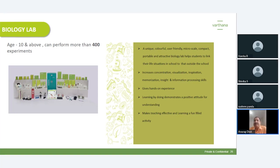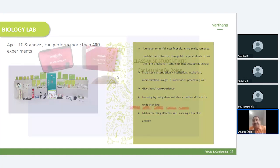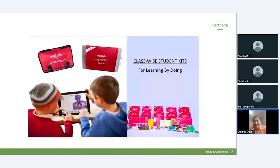In addition to the teacher-facing labs, we also have class-wise student kits — ten different math kits for Classes 1 to 10, and five science kits for Classes 6 to 10 covering physics, chemistry, and biology in one combined kit. Schools can either buy the kits for students to take home, or keep them in the classroom or library where students can practice activities after the teacher has demonstrated the concept. That's about the student kits.